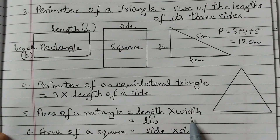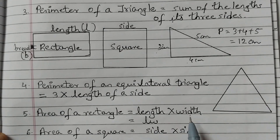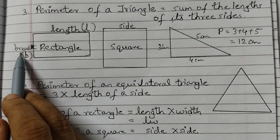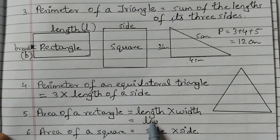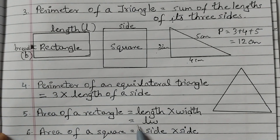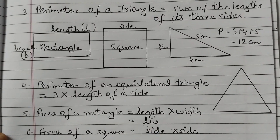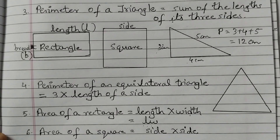The area of a rectangle is equal to length into width. Width is the same as breadth, so we write area = L × W, or length into width.